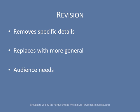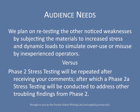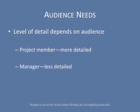Back in part one, I stated: give your audience what is needed. This is what the revision is doing. Compare the sample directly to the revision. The sample says: 'We plan on retesting the other noticed weaknesses by subjecting the materials to increased stress and dynamic loads to simulate overuse or misuse by inexperienced operators.' The revision says: 'Phase 2 stress testing will be repeated after receiving your comments, after which a Phase 2A stress test will be conducted to address other troubling findings from Phase 2.' The specific details in the sample are only useful to a person who has been working closely with your project. If your audience has been managing seven or eight projects, they may not be able to follow that level of detail. However, using the specific names of tests and referring to the more detailed attachment provides the audience with enough detail to make a decision. Both versions are detailed — they are just using different levels of detail.